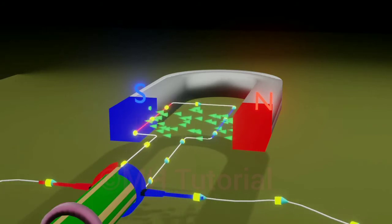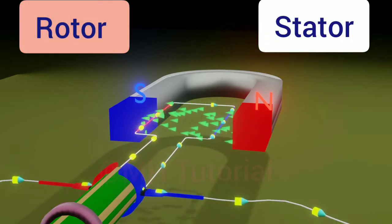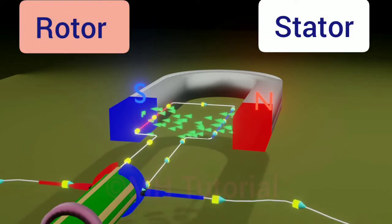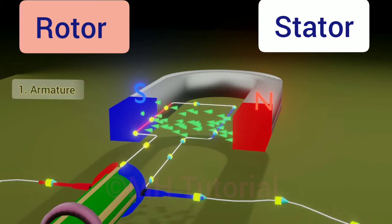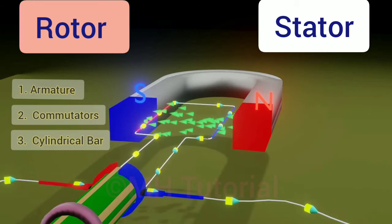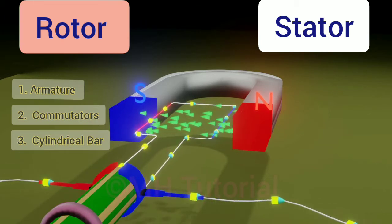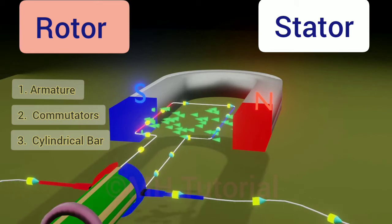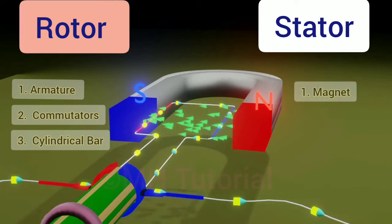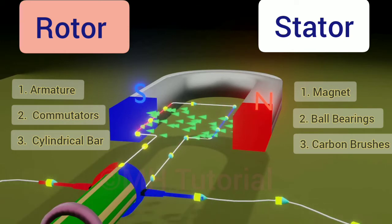Parts of motor are roughly classified into two types: the rotor and the stator. The rotor is the parts of the entire motor that can rotate - for example, armature, commutators, cylindrical bar, etc. are rotors. And the parts that remain fixed are called stators - for example, magnets, ball bearings, carbon brushes, etc. are all stators.